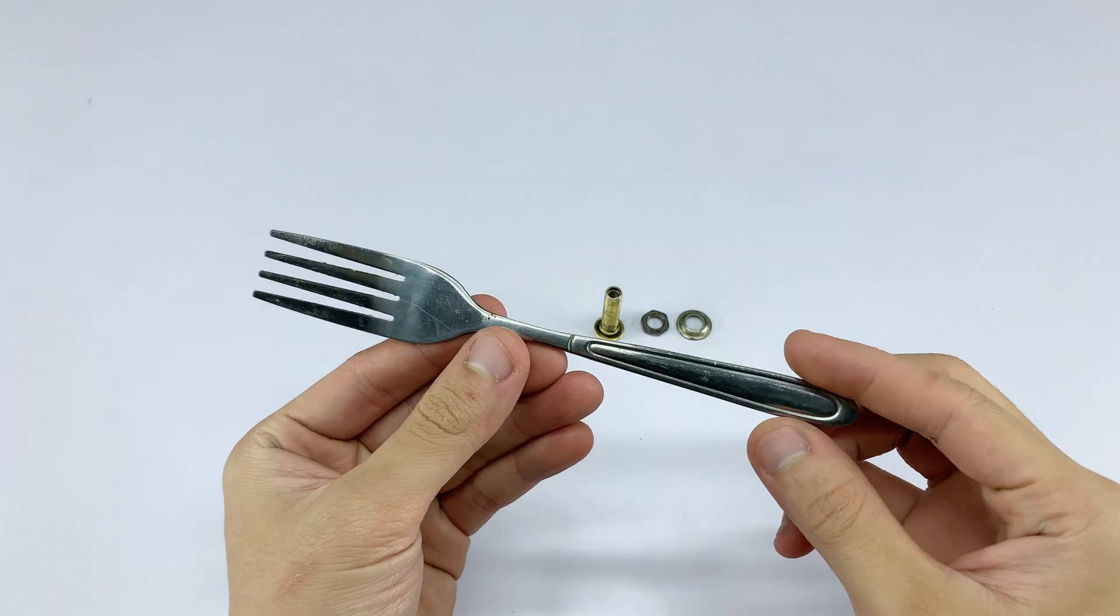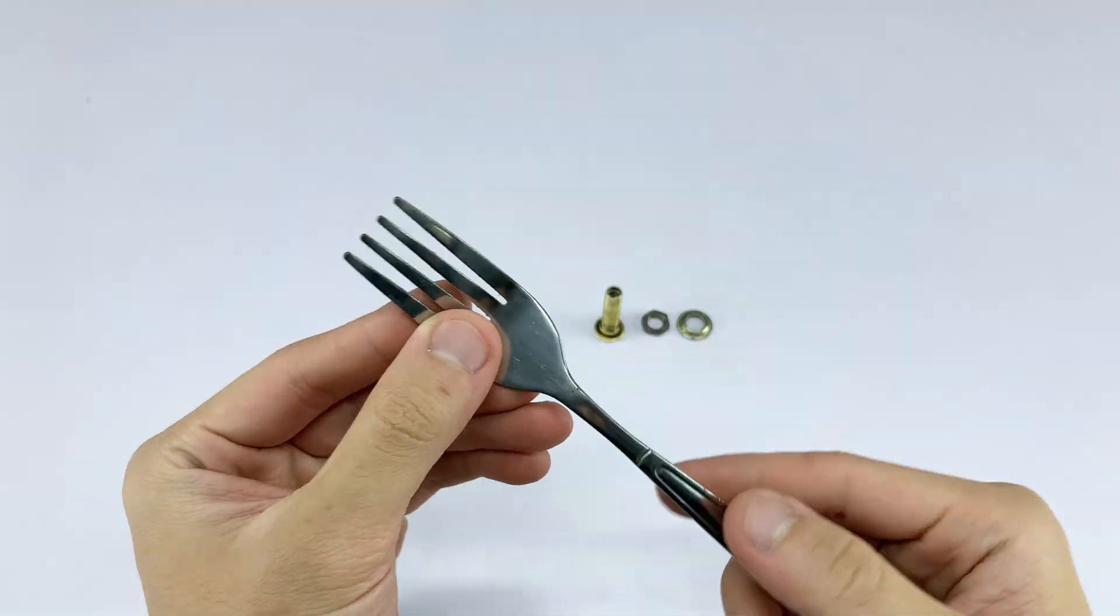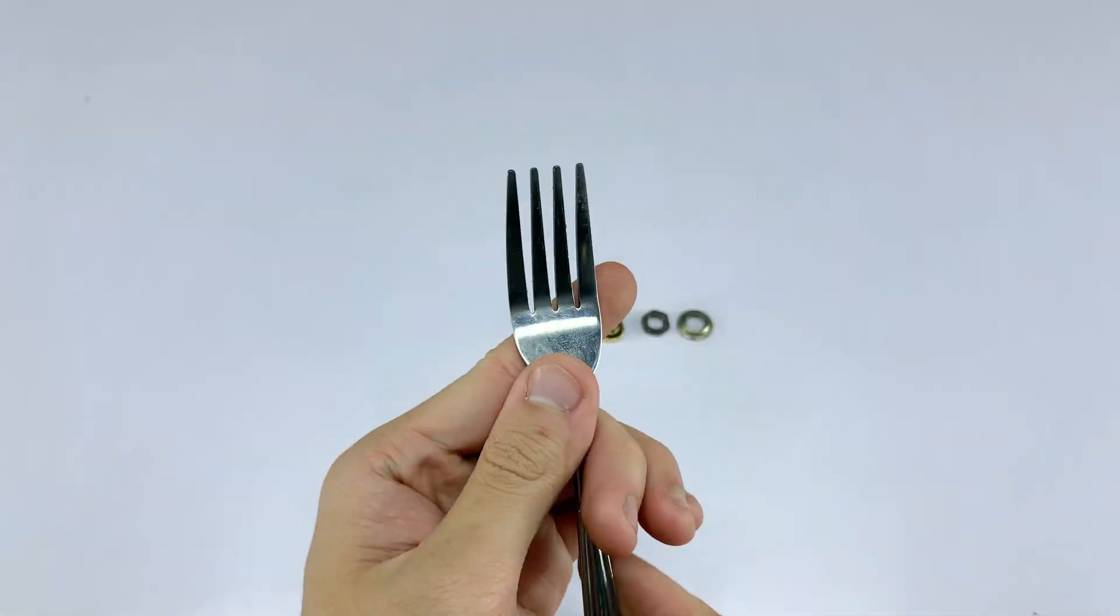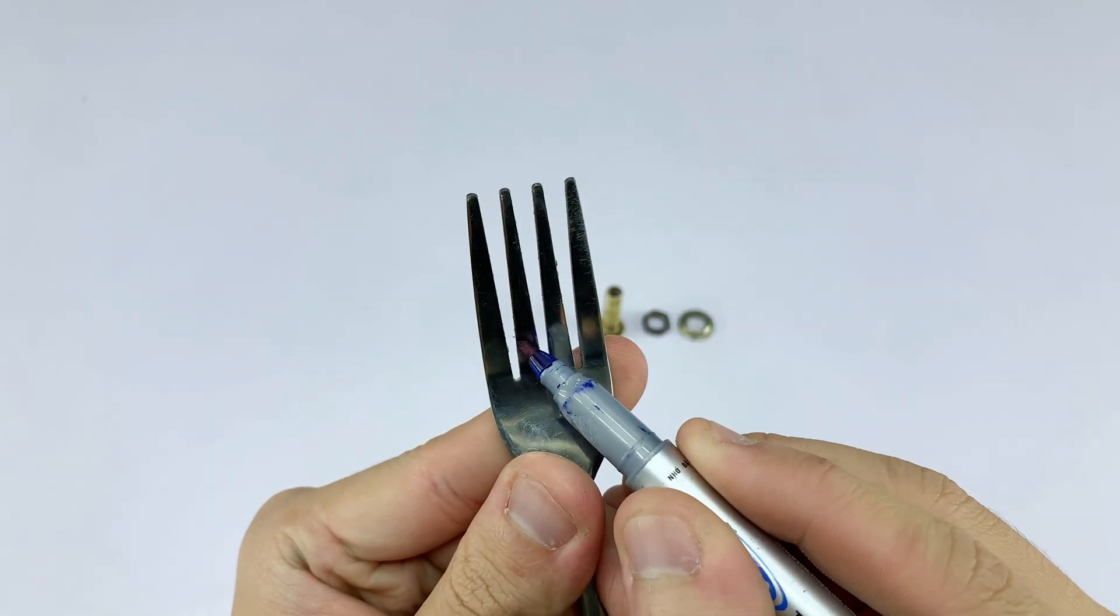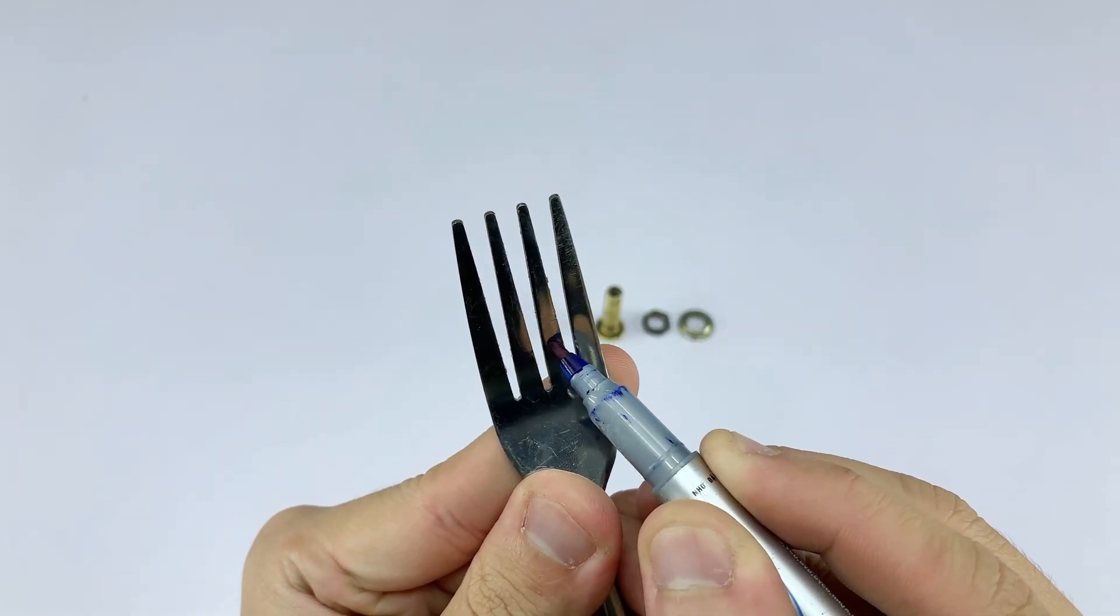I'm taking a simple metal fork. This will serve as the base for our new tool. I'll mark two branches here because these are the ones I'll be reshaping.